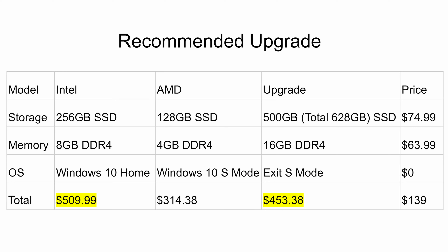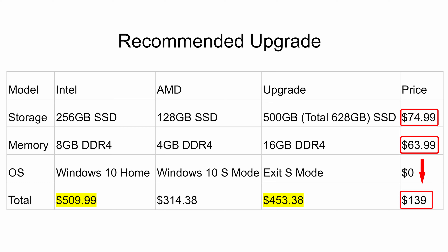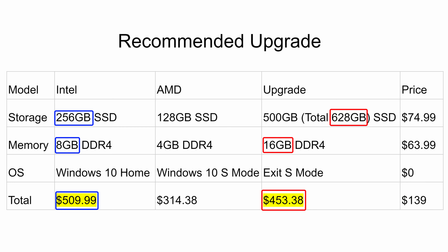Now those were the budget upgrade options, and as I showed you, you're still saving more than $100. So here are my recommended upgrade options: upgrade the 128GB storage by adding a 500GB SATA drive for $75 — you'll now have a total of 628GB, which is more than double what the Intel version has at 256GB. The second upgrade I recommend is bumping memory from 4GB to 16GB. The 16GB DDR4 RAM will cost $64, so the total upgrade price is $139. Adding that to the base price of $314, you end up with around $454. With these upgrades you're still saving more than $50, but now you have a seriously capable laptop with 16GB RAM and 628GB of SSD storage.